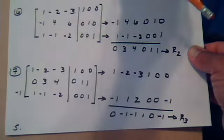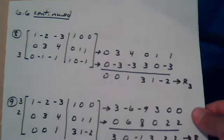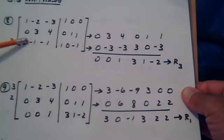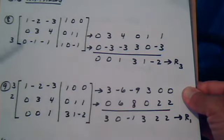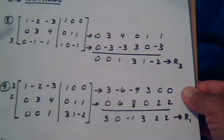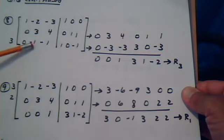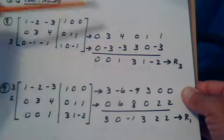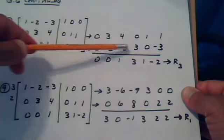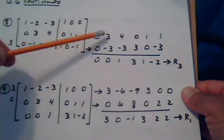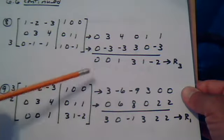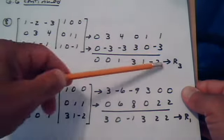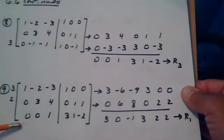Everything else stays the same. We have our zeros here, but we need another zero. I'm going to multiply row three by three so that I'll have a negative three and a plus three to give me the zero where I need it. Slide this one over, multiply by three, slide it over, go column by column — combine like terms, get a zero here and a zero here. This replaces row three; everything else stays the same.